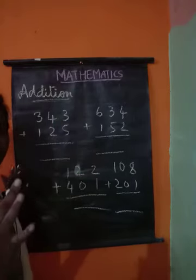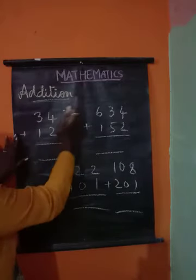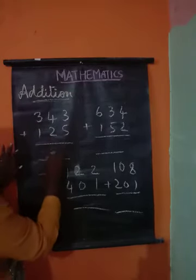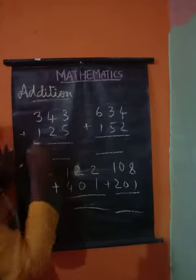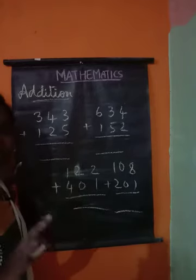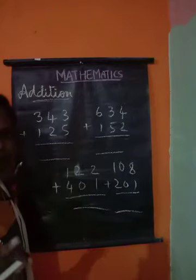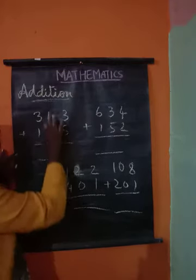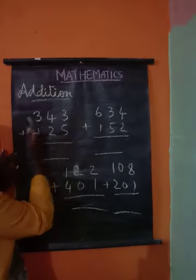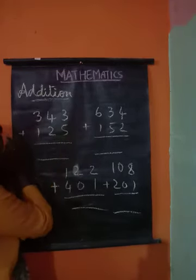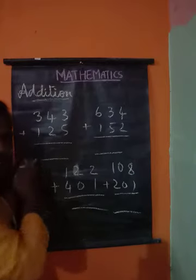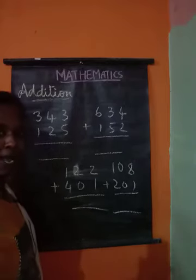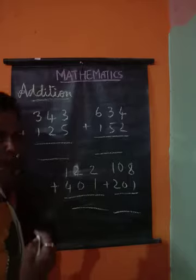Because if you are adding from the wrong side — for example, 3 plus 1 is 4, 4 plus 2 is 6, and 3 plus 5 is 8 — and if you write the answer in that order, your problem will be wrong. So always come from the ones end to the hundreds end. Keep that in mind and work out your problem.